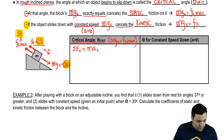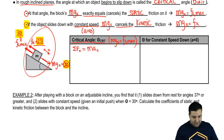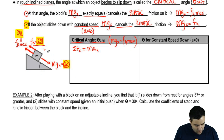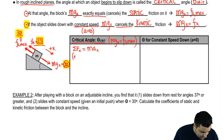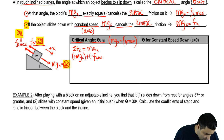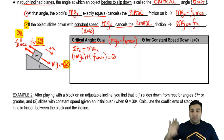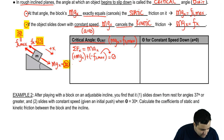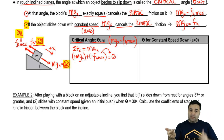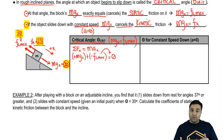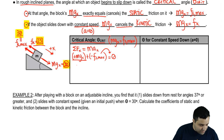For the critical angle where you don't move, mgx equals friction static max. Calling down the slope the positive x-direction, mgx is positive and friction static is negative, equaling zero because the object is in equilibrium. Moving friction to the other side gives mgx equals friction — they cancel.